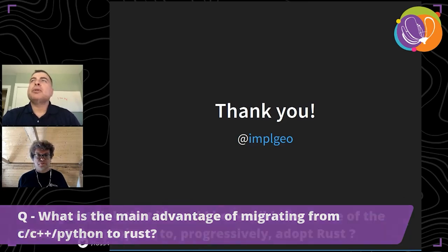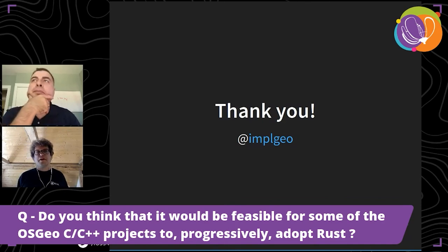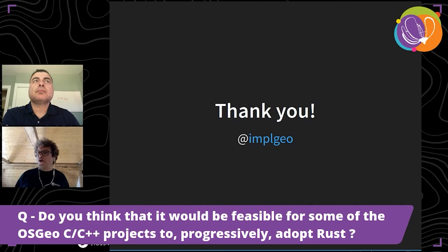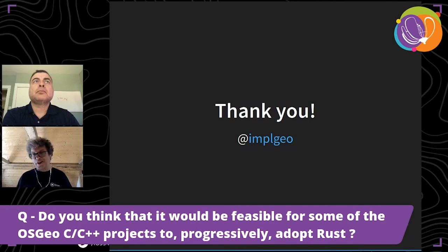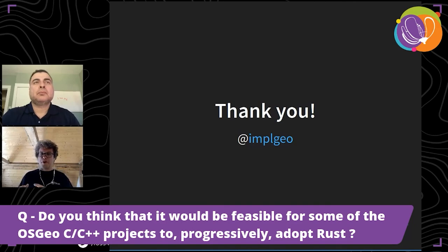Next question: do you think it would be feasible for OSGeo C++ projects to progressively adopt Rust? Technically it's possible. Other projects like cURL are doing it, replacing module by module with Rust. Geospatial projects are often very old and established — similar to cURL, maybe 20 years old. It is possible because you have C/C++ bindings, depending on your application. Technically, especially for C++ projects, it's an option. Firefox did it — they took out parts and rewrote them in Rust. This can be done with geospatial projects as well.